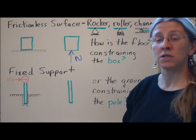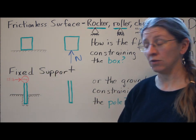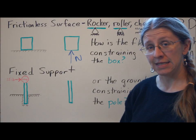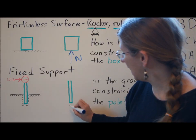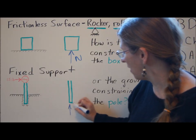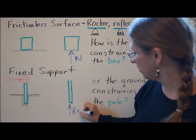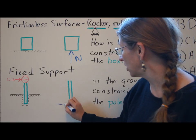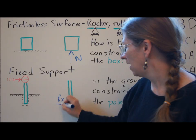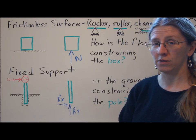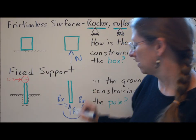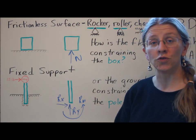A fixed support, like a stop sign that's stuck in the ground, can be drawn in a bunch of different ways, but the constraint is the same. The stop sign can't move up and down, so I have a reaction load in that direction. It can't move right and left, so I have a reaction load in that direction. And you can't tip it over, so I have a reaction moment in the third direction.